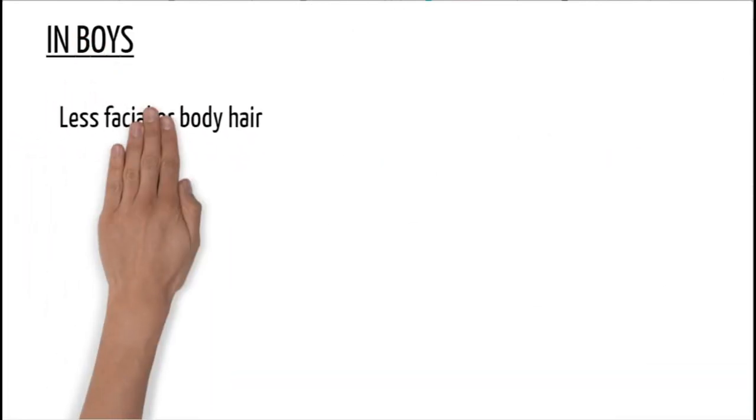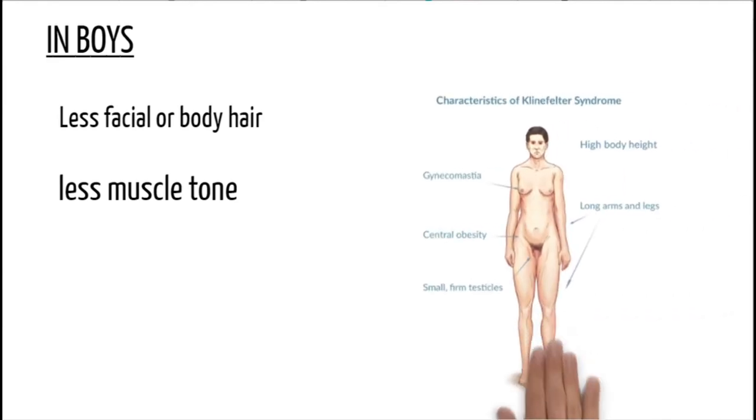In boys and teenagers: larger breasts than normal, less facial and body hair and it comes in later, less muscle tone and muscles grow slower than usual, longer arms and legs, wider hips, and a shorter torso than other boys their age.